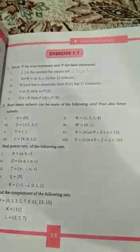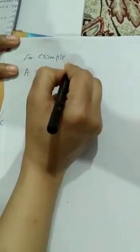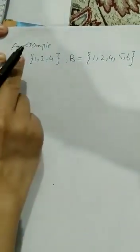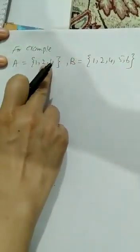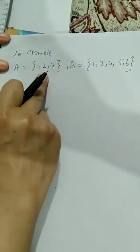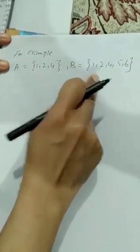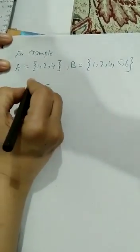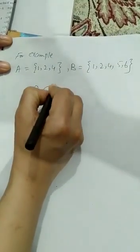For example: set A is equal to {1, 2, 4} and set B is equal to {1, 2, 4, 5, 6}. Every element of set A — 1, 2, 4 — is present in set B. So set A is the subset of set B. It is denoted by A ⊆ B.